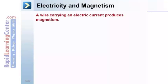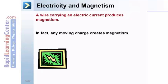Electricity and magnetism. A wire carrying an electric current produces magnetism. In fact, any moving charge creates magnetism.